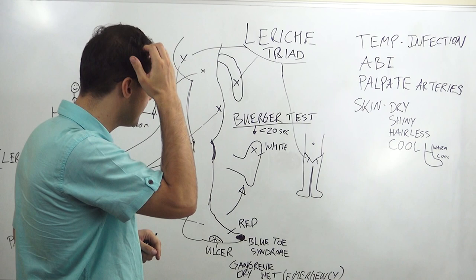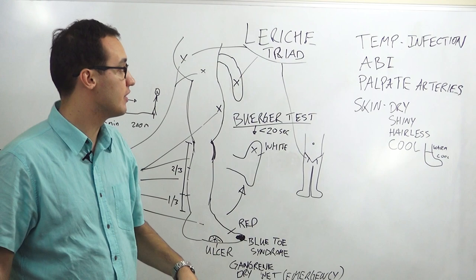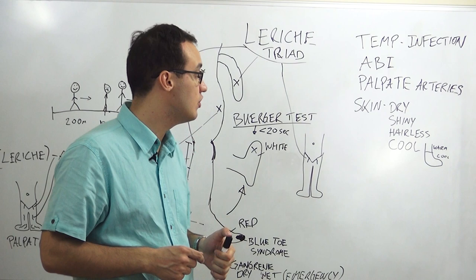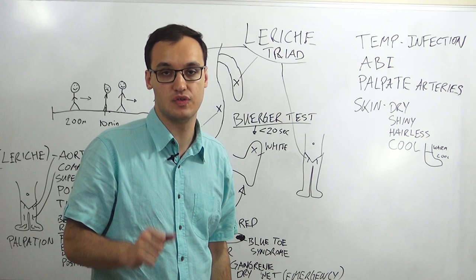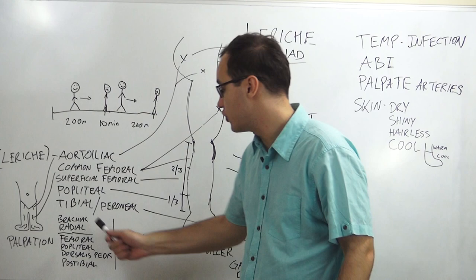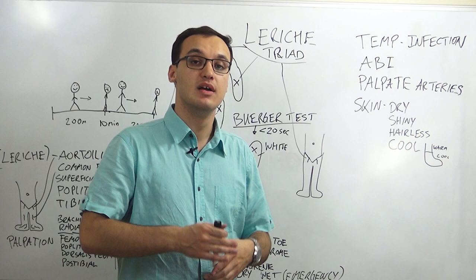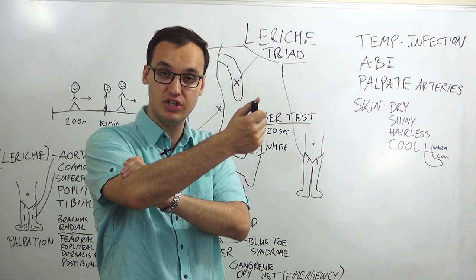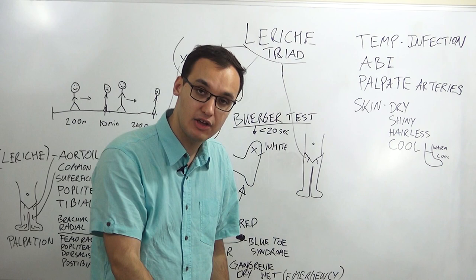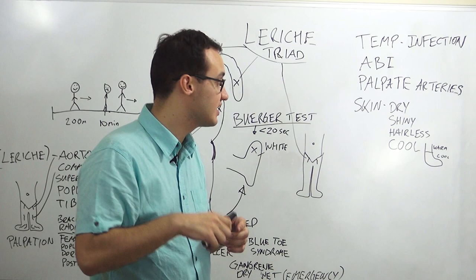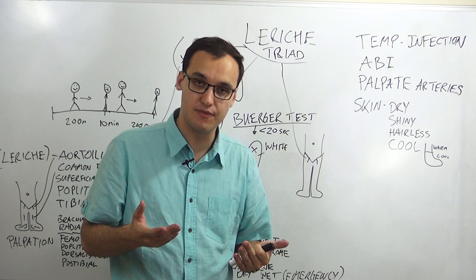An important investigation is the ankle-brachial index (ABI), which I have covered in another video. It uses a Doppler device to measure blood pressure at the ankle and the brachial region. You divide the ankle value by the brachial value to get the index, which should normally be between 0.9 and 1.3. Also measure temperature — fever may indicate infection.